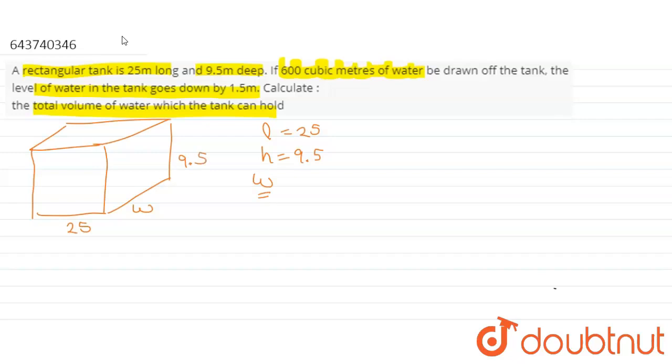Here we are given a condition: if volume of water in the tank is reduced by 600 cubic meters, then the height gets reduced by 1.5 meters.